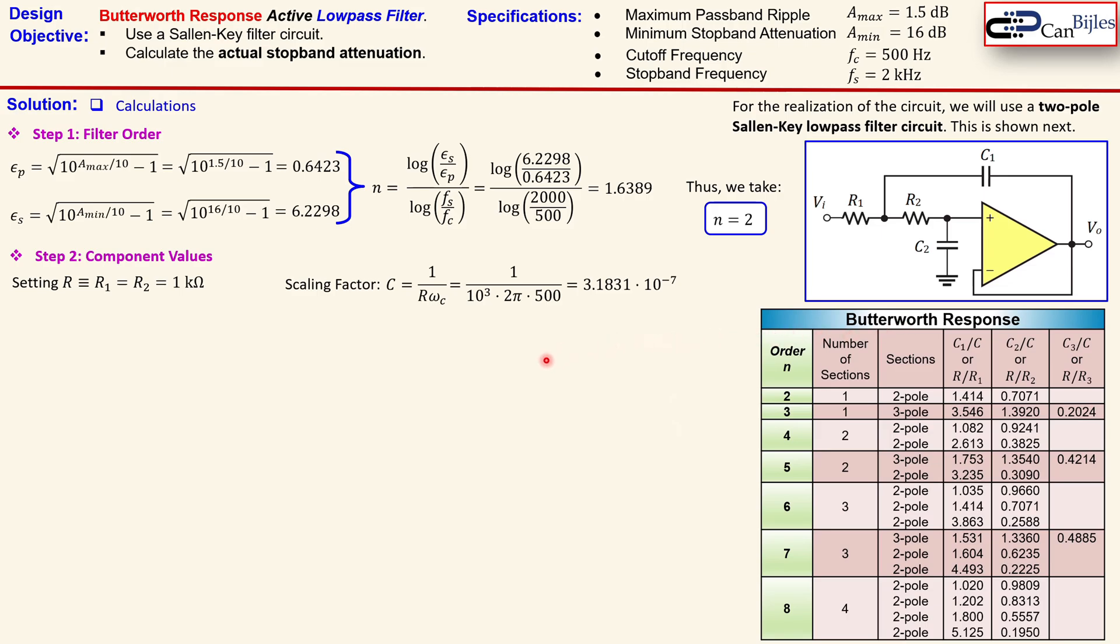This is also valid for different like the Chebyshev and the Bessel response filters. So we need to use this in this case and looking at this table and looking at the order we need to have the second order. We see that we have a number of sections which is just one and the sections we will use is 2-pole that is actually also given as information in this table.